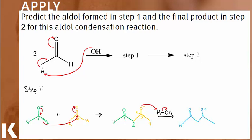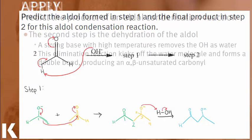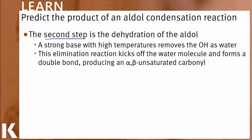Now that we have the aldol, let's move on to the second step. Step two is the condensation, or dehydration, of the aldol. A dehydration, requiring a strong base and high temperature, results in the net removal of a water from the molecule. This is called an elimination reaction, because the removal of the water forms a double bond.